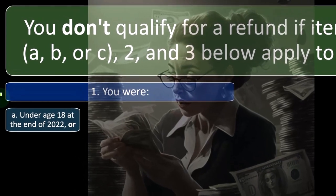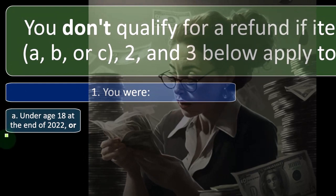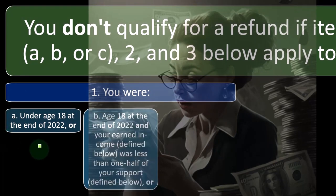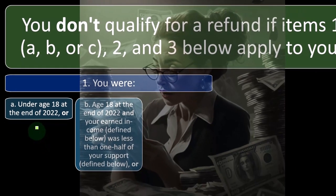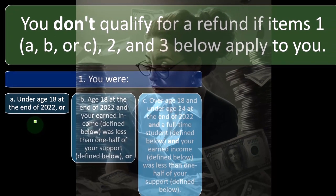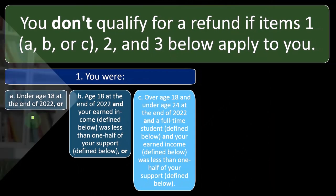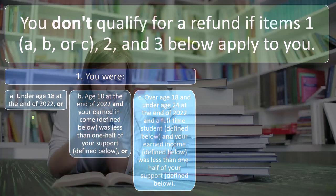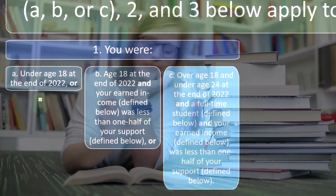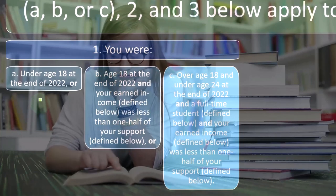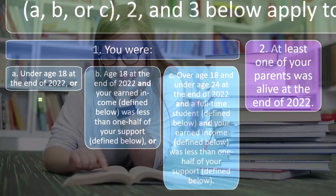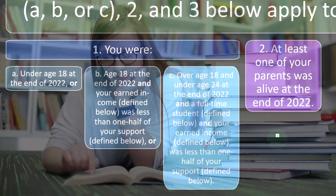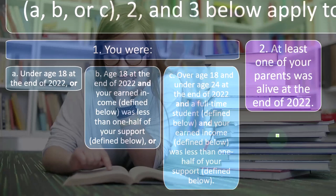Condition 1: you were (A) under age 18 at the end of 2022, or (B) age 18 at the end of 2022 and your earned income was less than half of your support, or (C) over 18 and under 24 at the end of 2022, a full-time student, and your earned income was less than one-half of your support — meaning, in essence, you could potentially be subject to being claimed as a dependent.